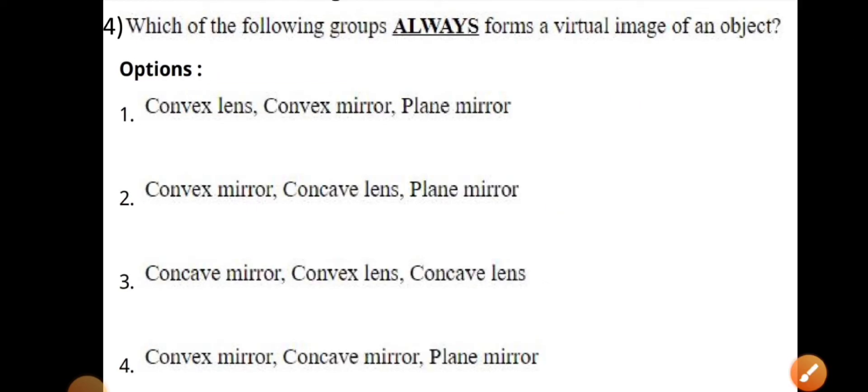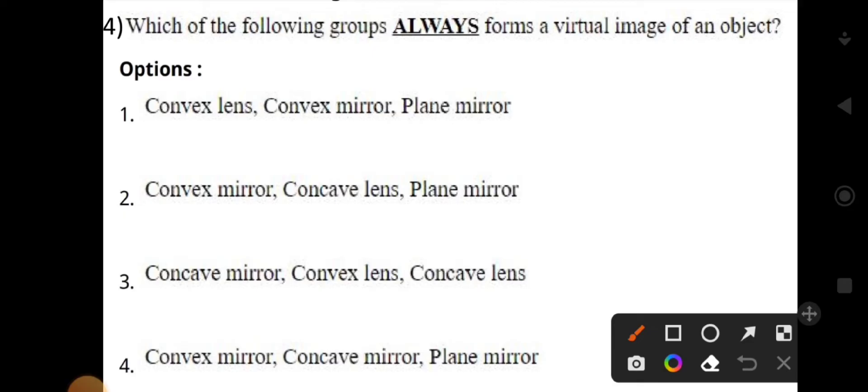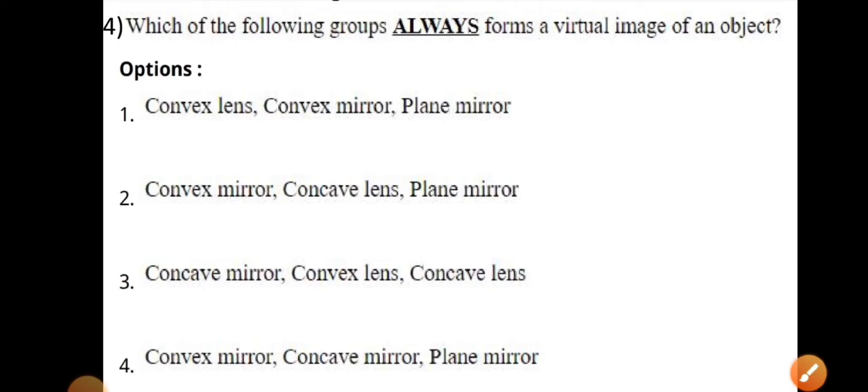Which of the following groups always forms a virtual image of an object? Convex mirror, concave lens, plane mirror. Option number two is correct.